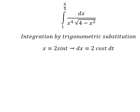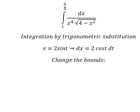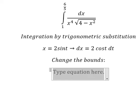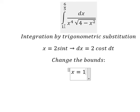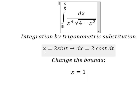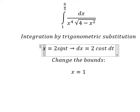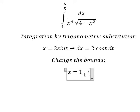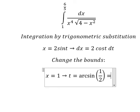Next, I need to change the bounds. When x equals 1, I substitute 1 here. We divide both sides by 2, and we can find the value of t equal to arcsin(1/2), and that is π/6.